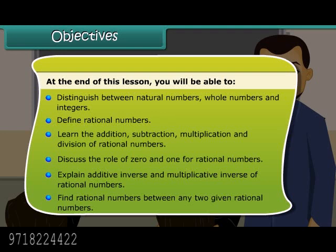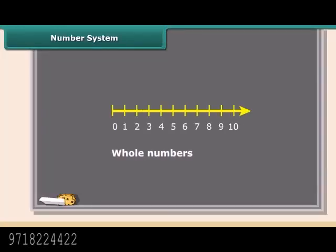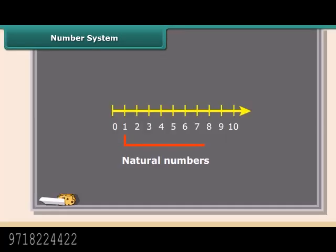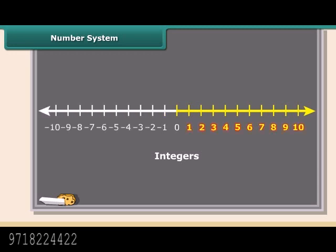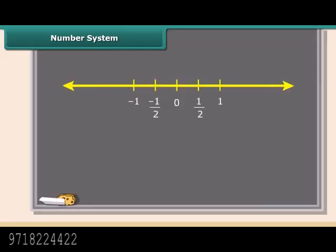Find rational numbers between any two given rational numbers. Whole numbers are simply the numbers 0, 1, 2, 3, 4, 5, and so on — there are no fractions. Natural numbers are the positive whole numbers except 0. Integers are like whole numbers but they also include negative numbers, so integers can be positive, negative, and 0.